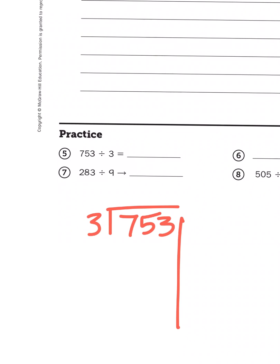Well, yeah, because 3 times 100 is 300. That gives me a product of 300. Then I can subtract, 453. I could probably get another group of 100 out of that, because 453 is greater than 300.